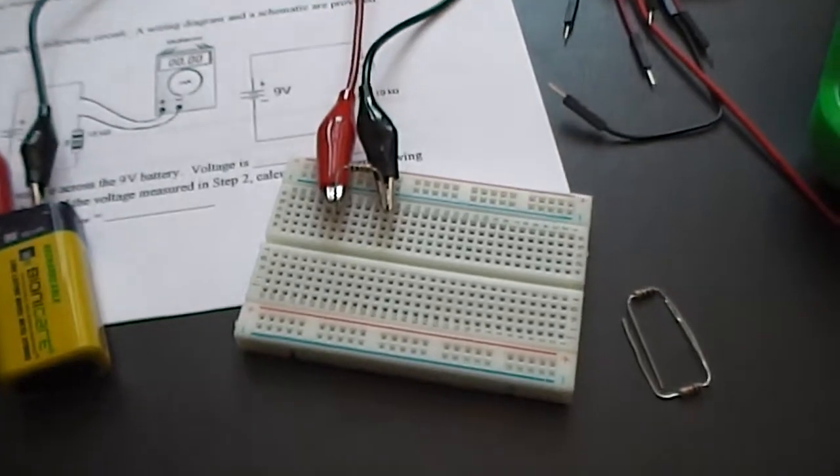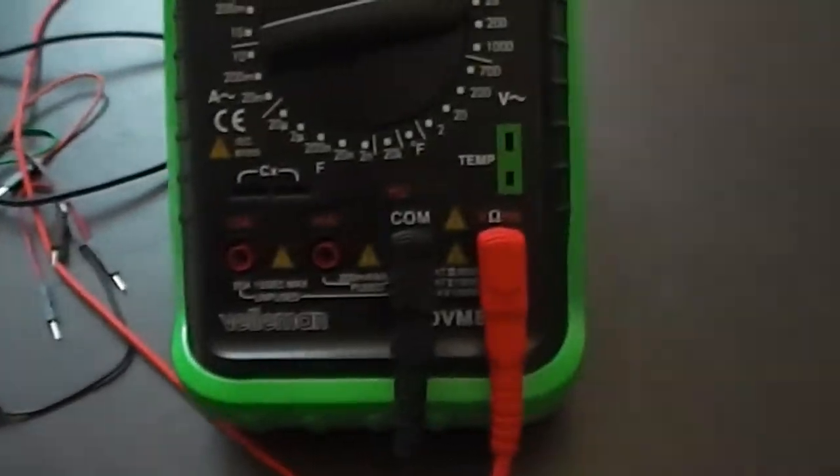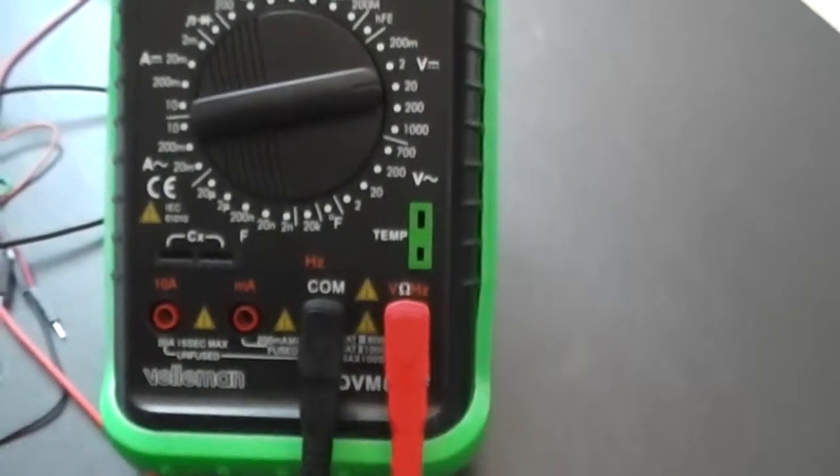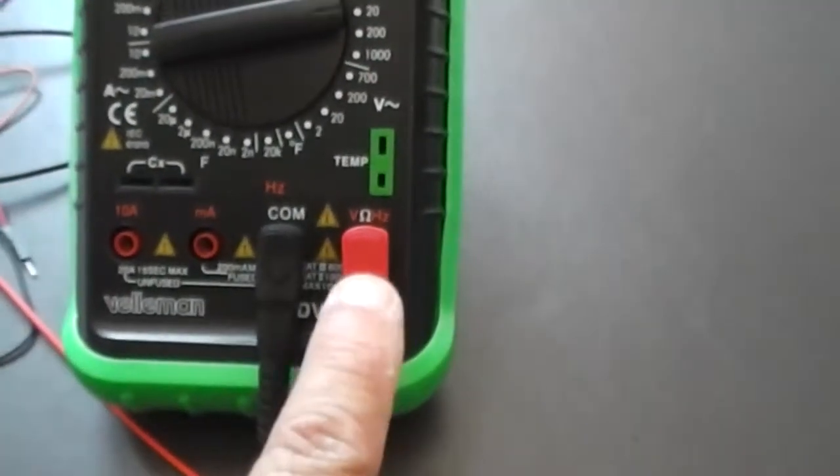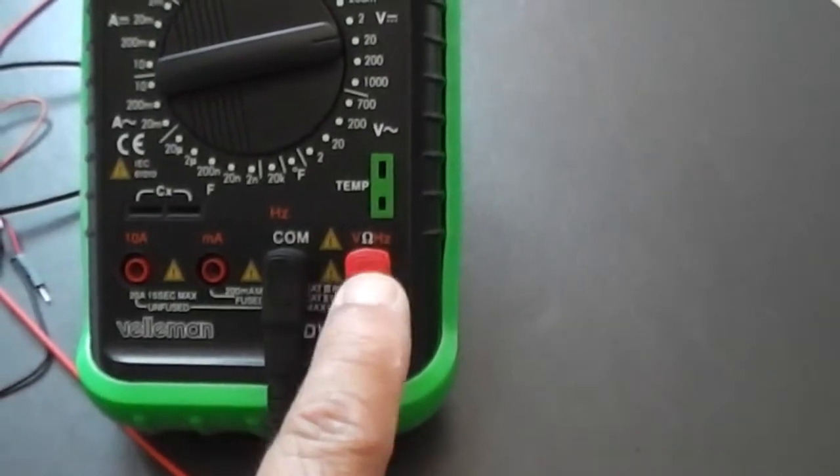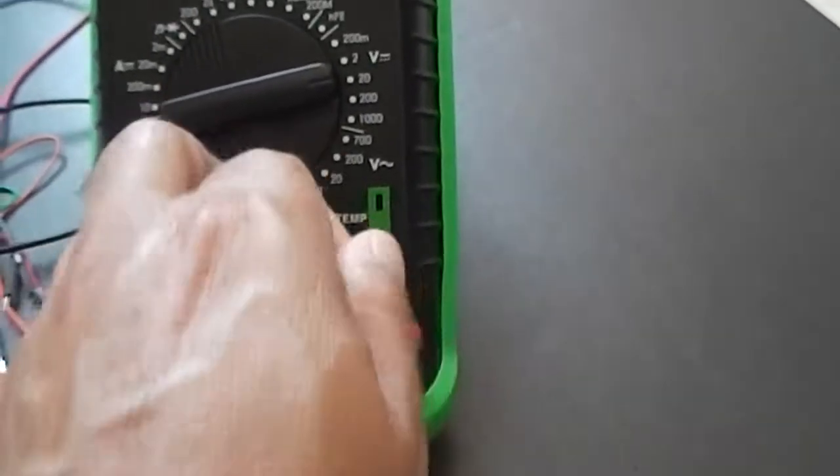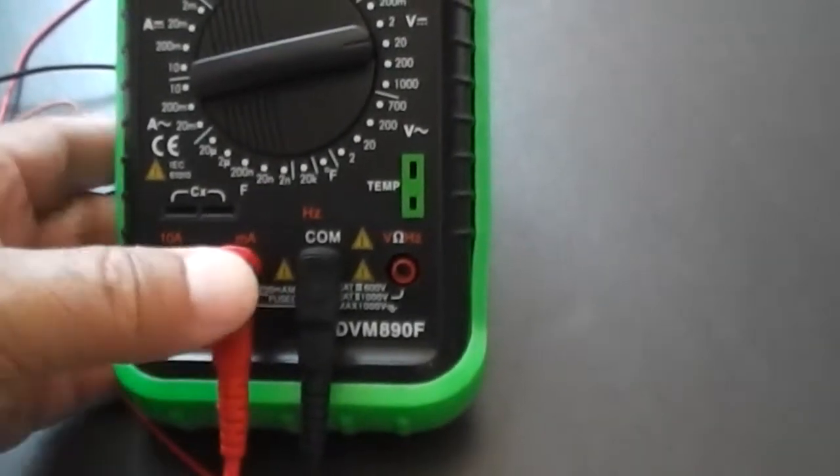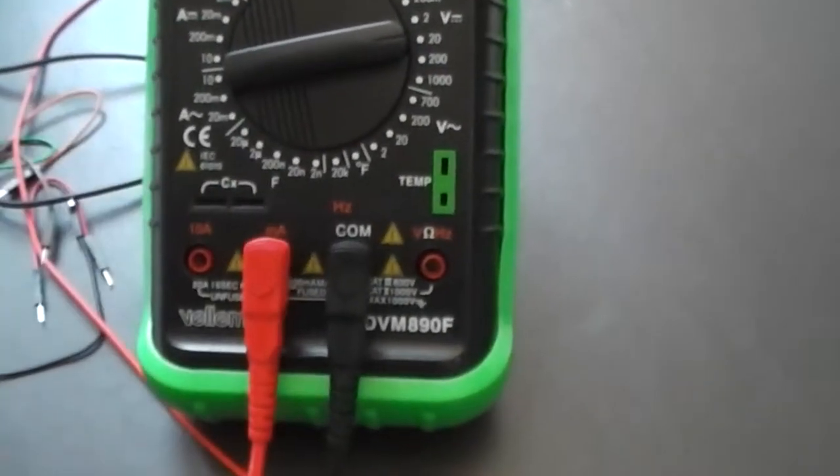And now to measure current, well, to measure current, don't forget that on your meter, you need to set it up to measure current. You can see right here that this lead is for volts, ohms, and for frequency. I need to pop that out and plug it into the milliamp insert right there.